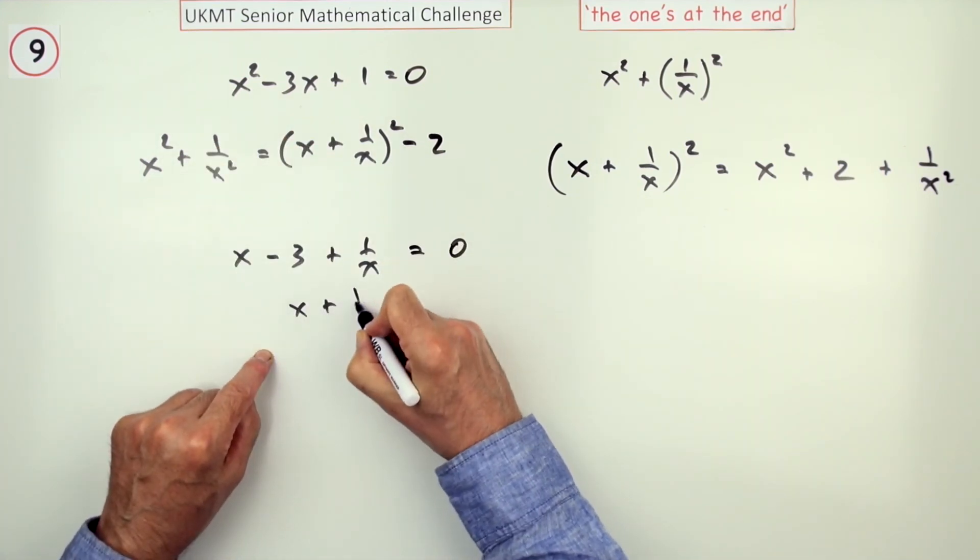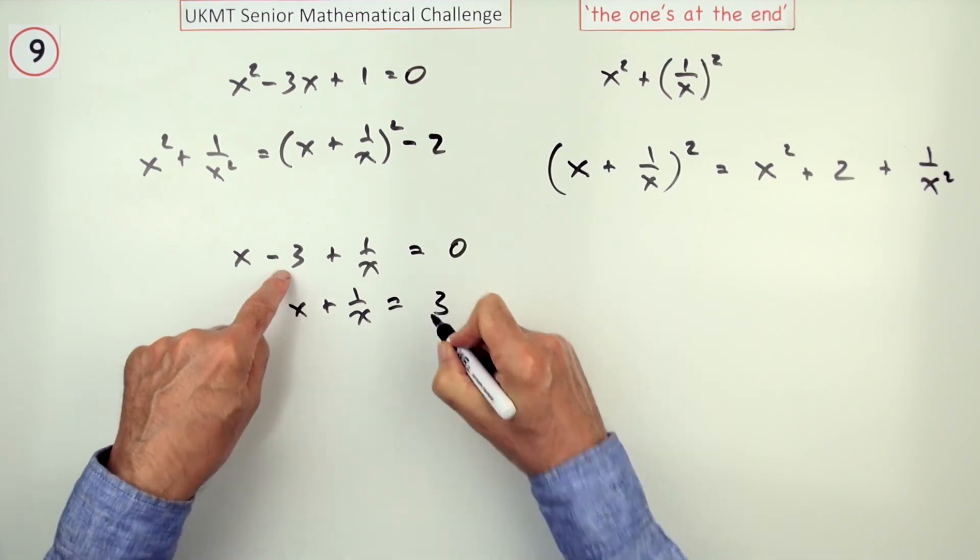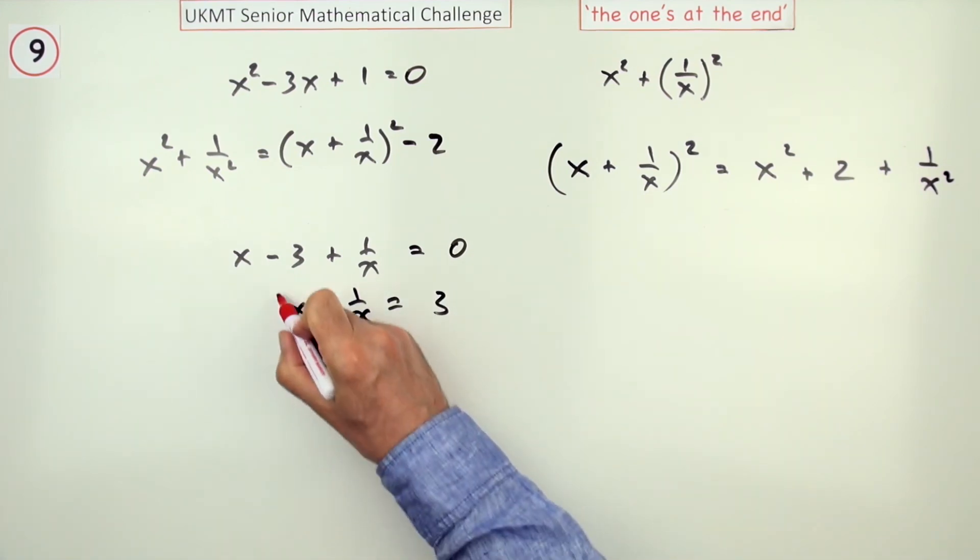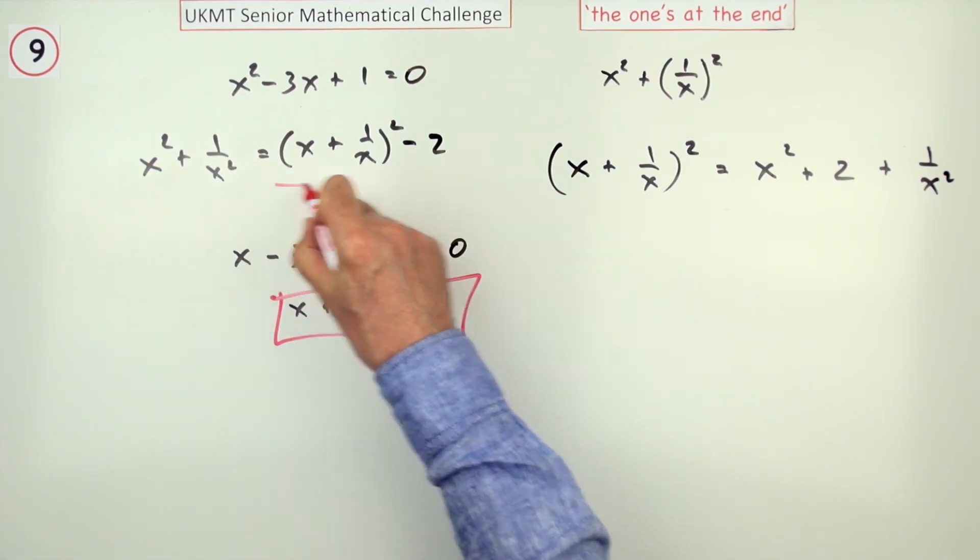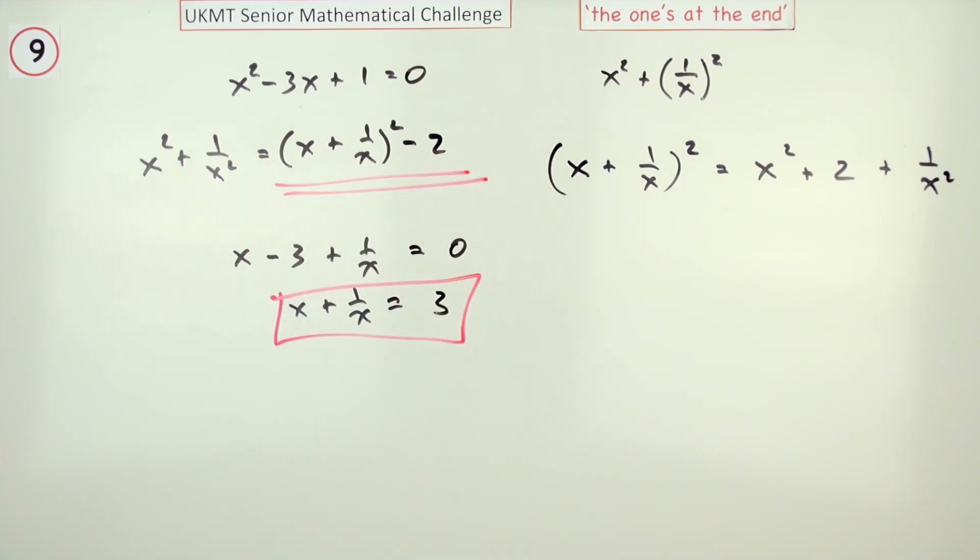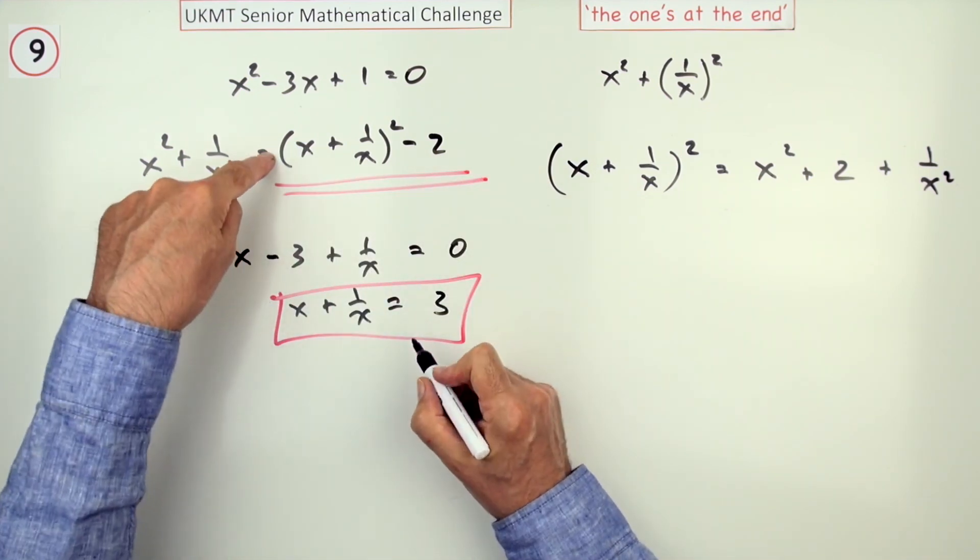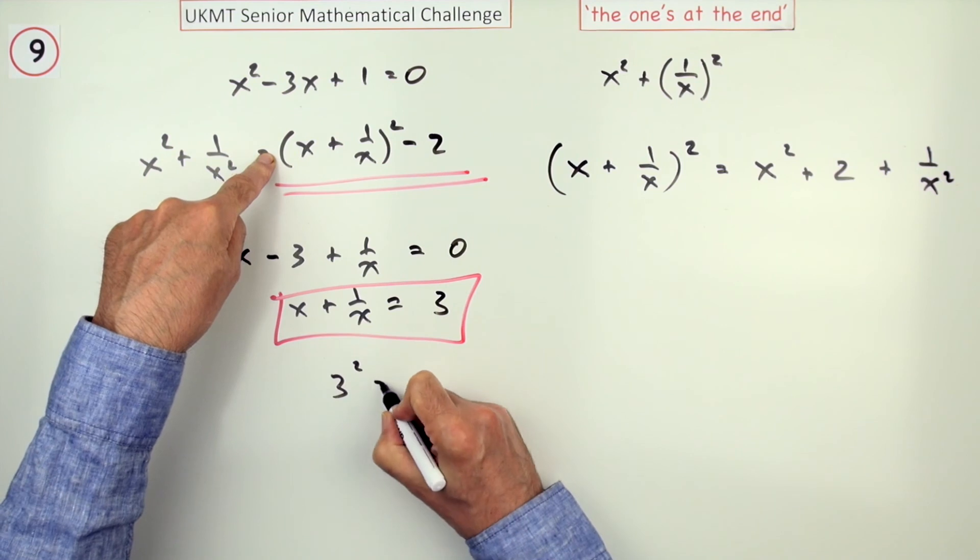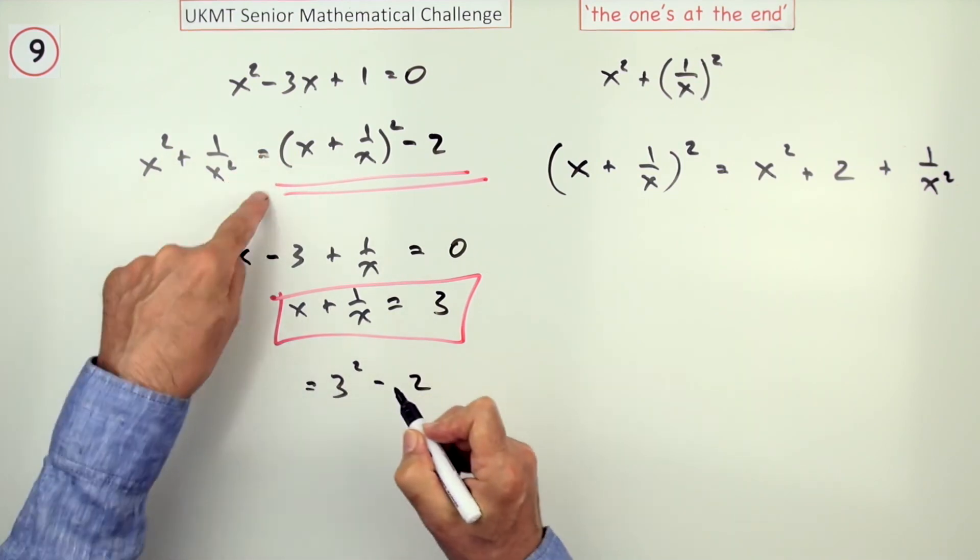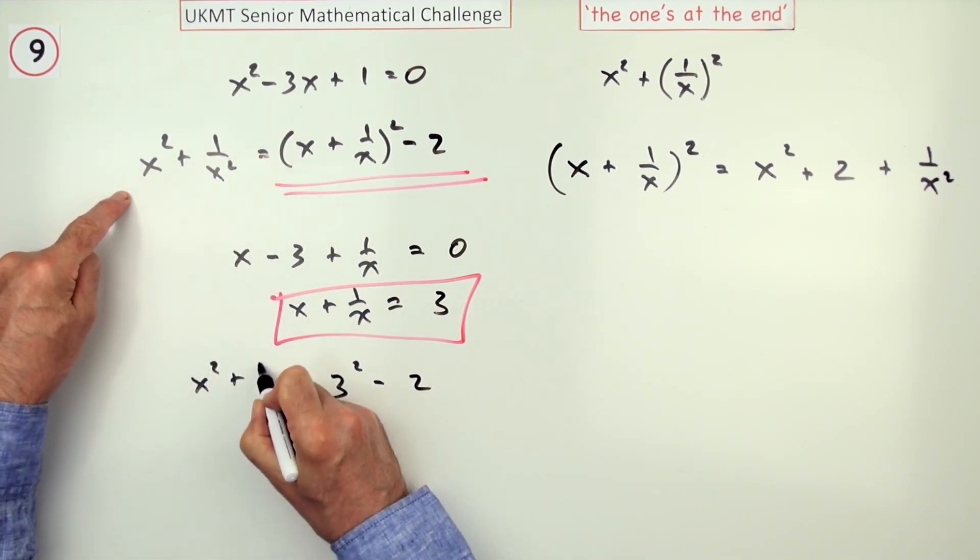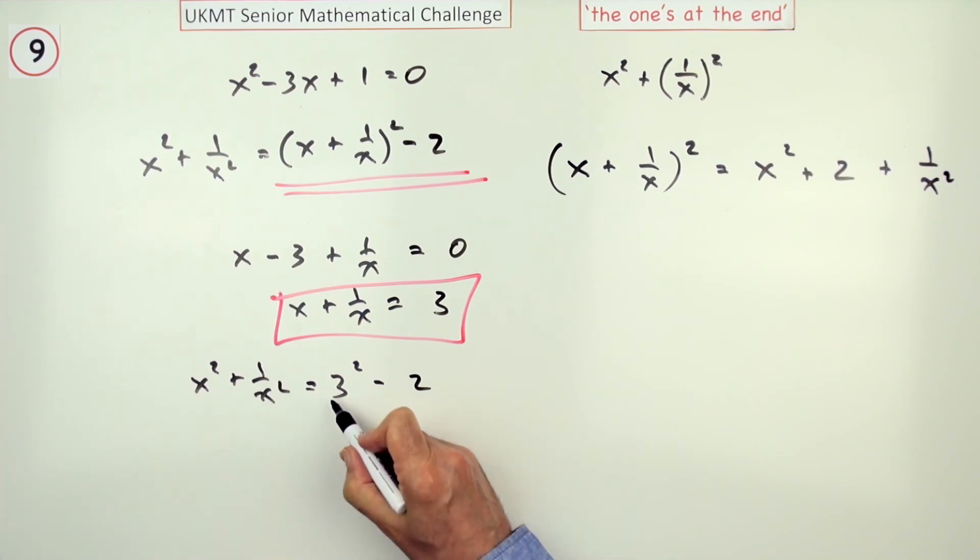Divide by X in this expression and you've got X minus 3 plus 1 upon X equals 0. So, there you are. X plus 1 upon X equals 3. Now, you can take this and feed it into that. So, that says then that 3 squared minus 2 is equal to the thing that you wanted in the first place. And, 3 squared minus 2 is 9 minus 2, which is 7.